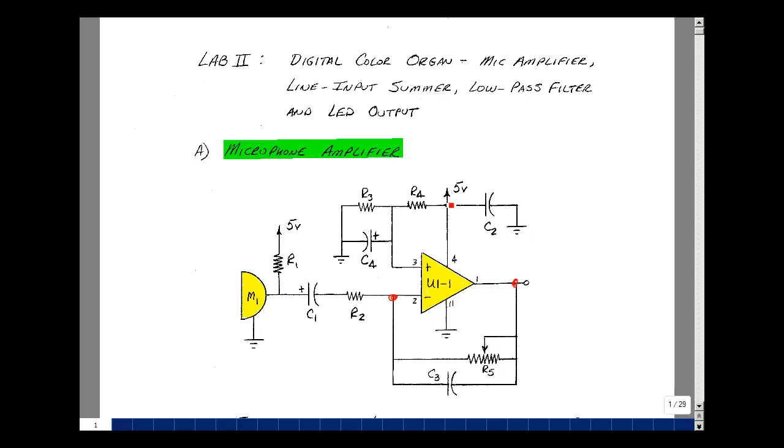Also notice there's a capacitor here C2 added at the power supply. This is like what we did in the 203 and 303 lab to stop power supply oscillations.